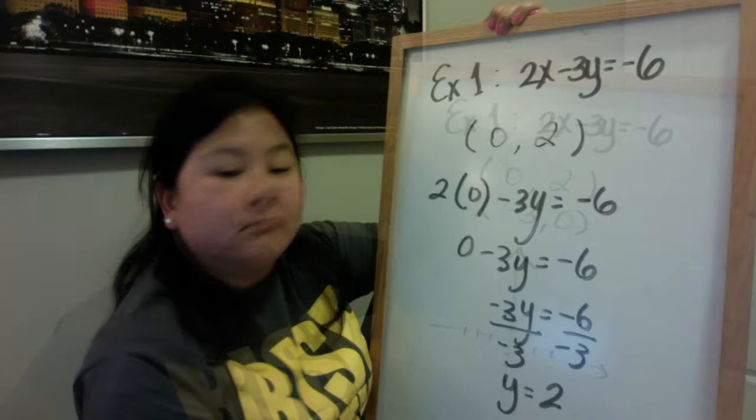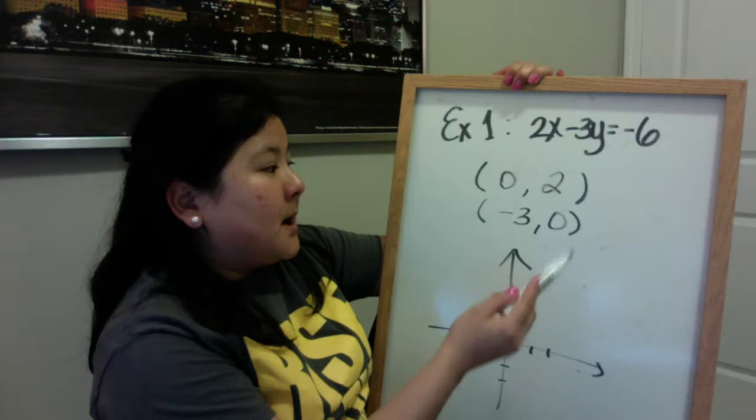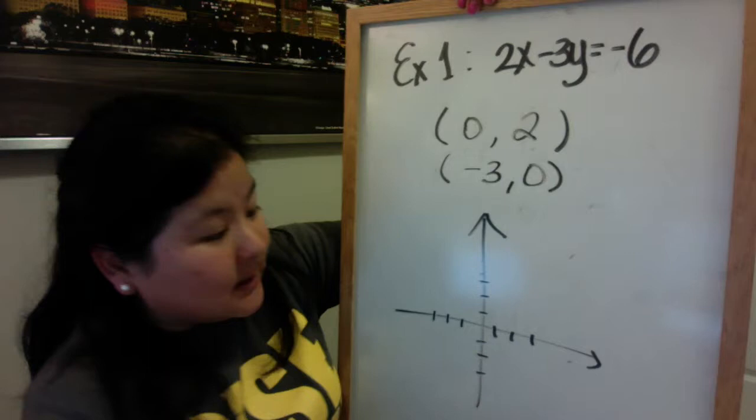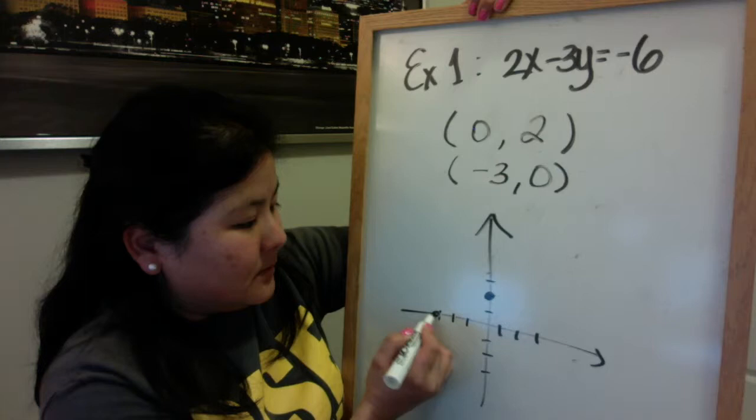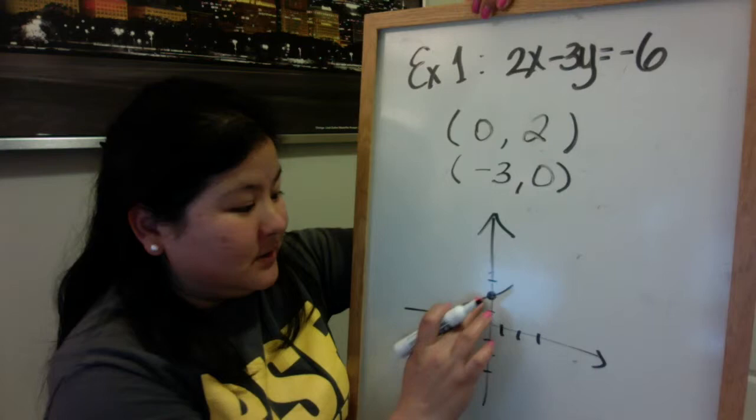Now that I have my intercept points, I've got my y-intercept and my x-intercept. All I need to do is plot them. I know that when x is 0, y is 2. And when x is negative 3, y is 0. Now that I have 2 points, I can draw my straight line. Use a ruler through those 2 points and I've graphed it.